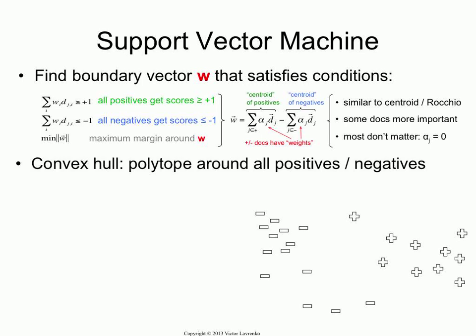For this, we're going to need a notion of a polytope — a convex hull around the positives and the negatives. The best way to think about it is: imagine in 2D that I have a rubber band, and I'm going to put a rubber band around the negatives and a rubber band around the positives. In multi-D, just imagine that I'm wrapping a rubber sheet around the set of positives and the set of negatives. That's what a polytope is — it's a set in space defined by the corner points.